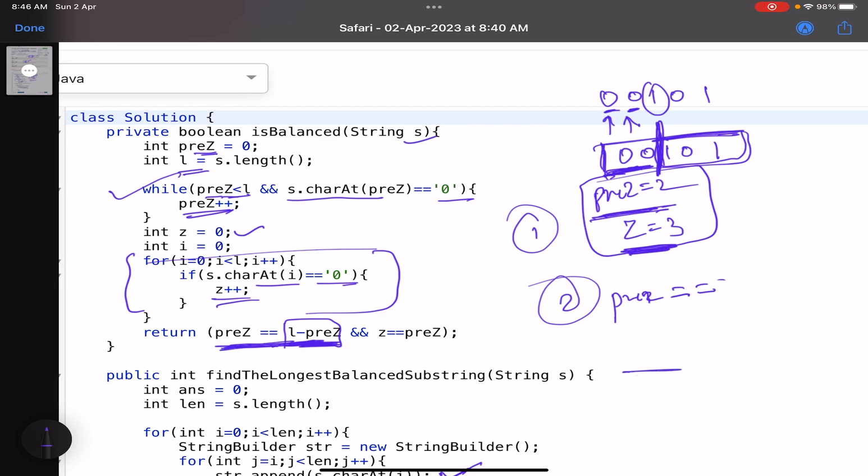First, the prez should be equal to the remaining string. So if all are ones, then it will be balanced. But I'll also check Z equals to prez. If Z is not equals to prez, that means in the remaining part, I have some zeros and hence it will not be a balanced string. So I return this. So this is what I do.